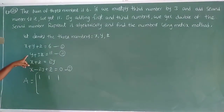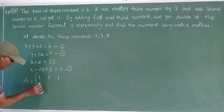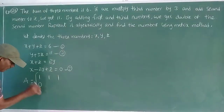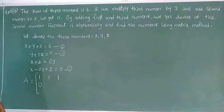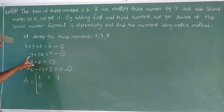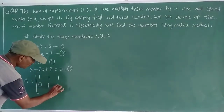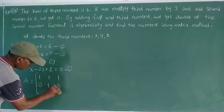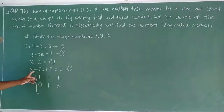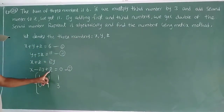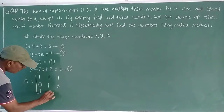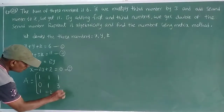Second equation: no x, so x coefficient is 0; y coefficient is 1; z coefficient is 3. Third equation coefficients: 1, minus 2, 1.